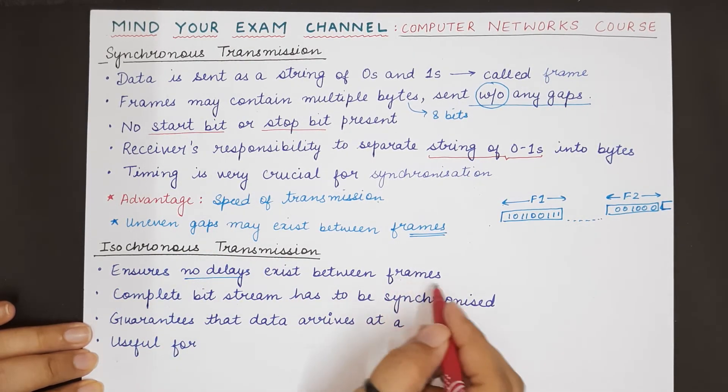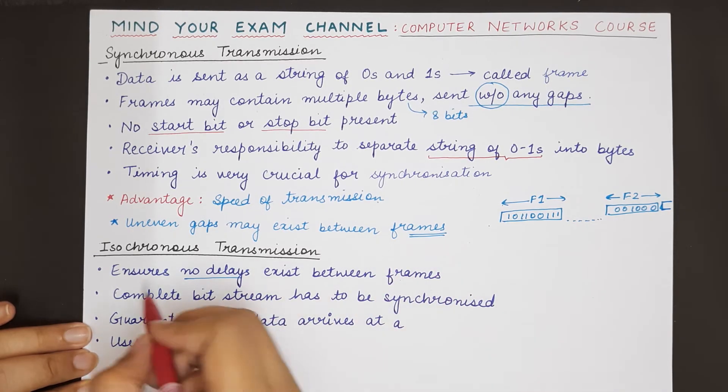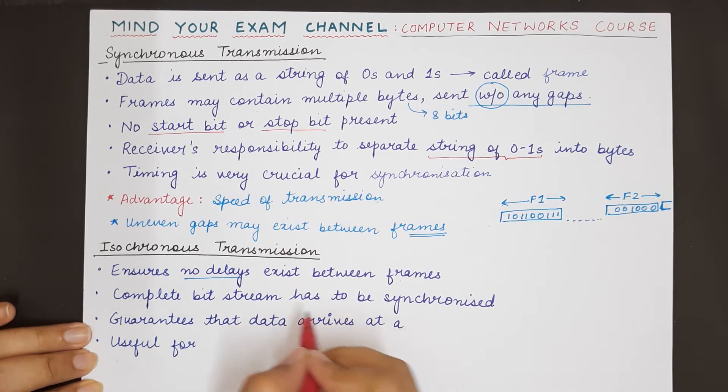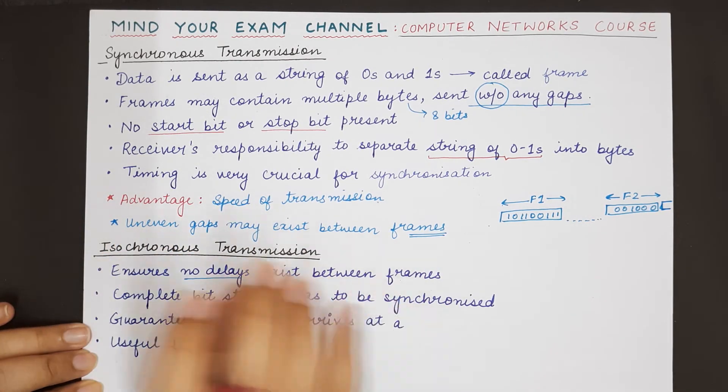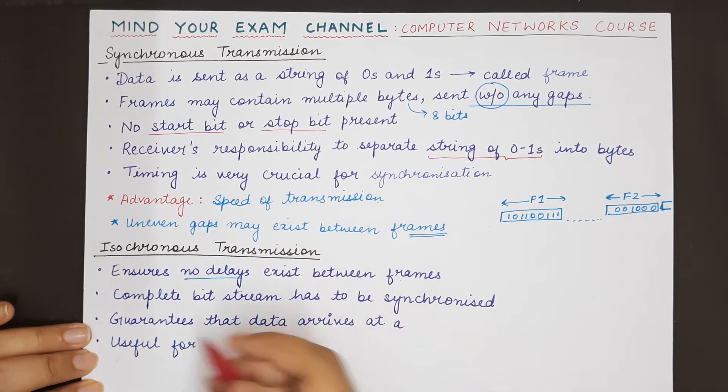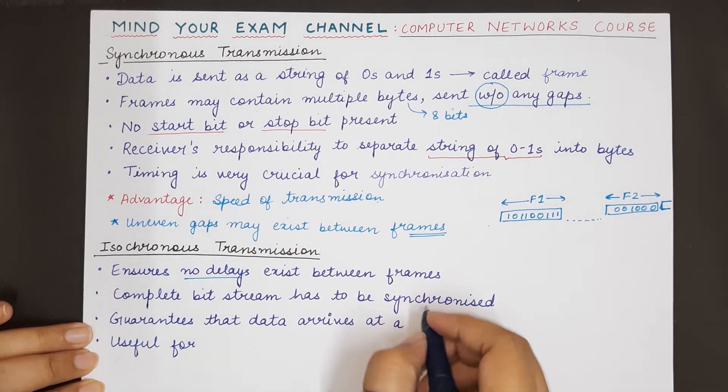Therefore, the delays or time gaps between frames do not exist, and the complete bit stream has to be synchronized. The sender and receiver must continuously exchange data, and isochronous transmission guarantees that the data will arrive at a fixed rate.